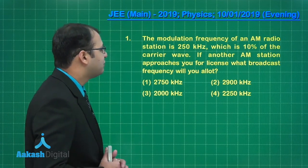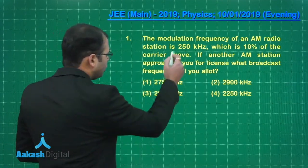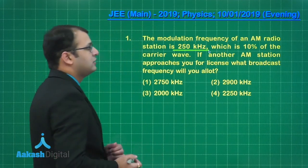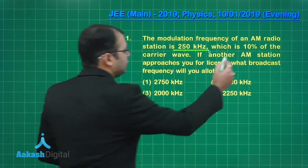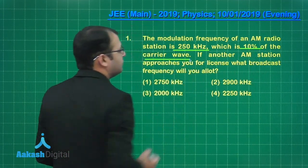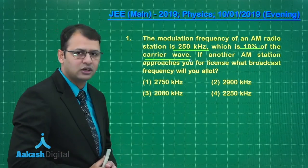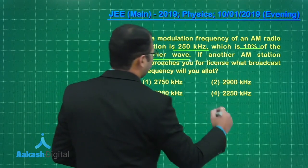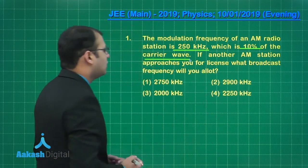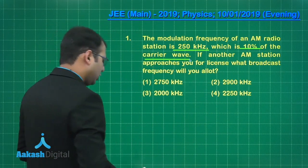The modulation frequency of an AM radio station is 250 kilohertz which is 10% of the carrier wave. That means the frequency of carrier wave would be 2500 kilohertz. If another AM station approaches you for license, what broadcast frequency will you allot?